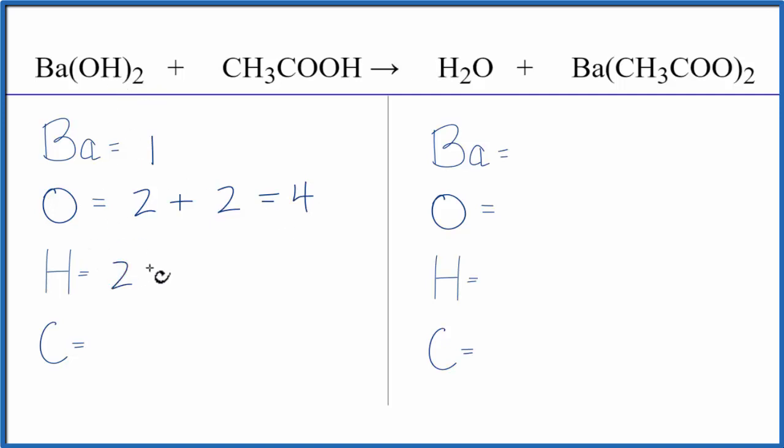Hydrogen is two times one, so two plus three plus one here. That gives us six hydrogen atoms. Carbons: one, two.